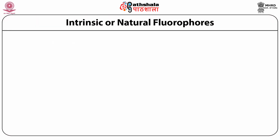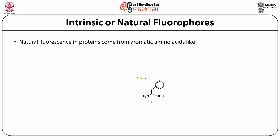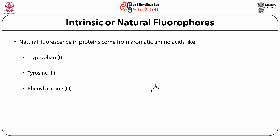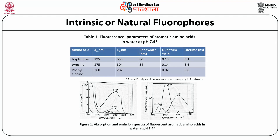Intrinsic or natural fluorophores are substances, chemicals, or biomolecules. Natural fluorescence in proteins comes from aromatic amino acids like tryptophan, tyrosine, and phenylalanine. This table shows various parameters of aromatic amino acids for fluorescence recording in water at pH 7.4. The first column shows amino acid, second is excitation wavelength in nanometers, third is emission wavelength in nanometers, followed by bandwidth, quantum yield, and lifetime.